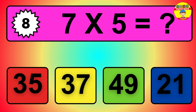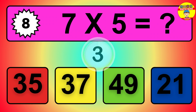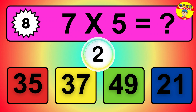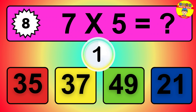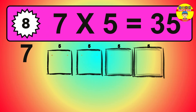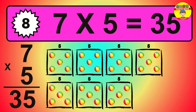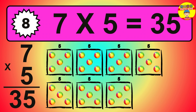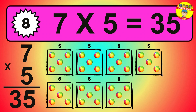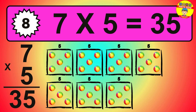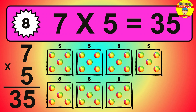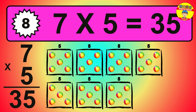Question 8. 7 times 5 equals what? The answer is 7 times 5 is 35. To calculate, we have 7 groups with 5 balls each one. So how many balls do we have? 35 balls.